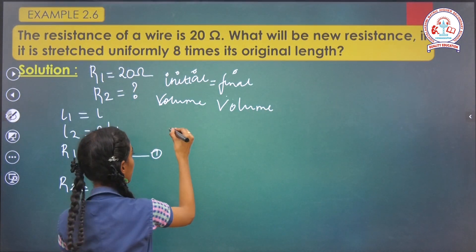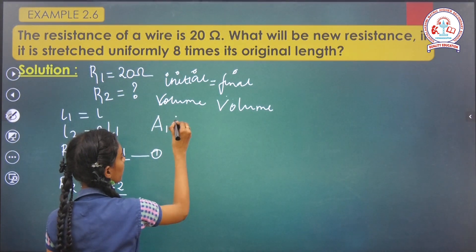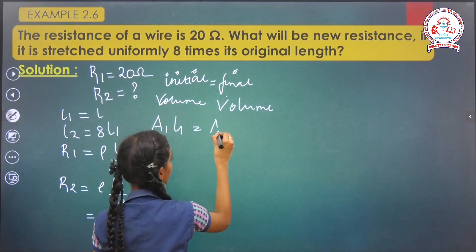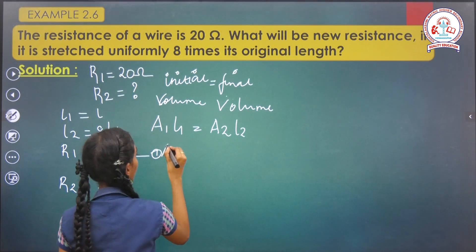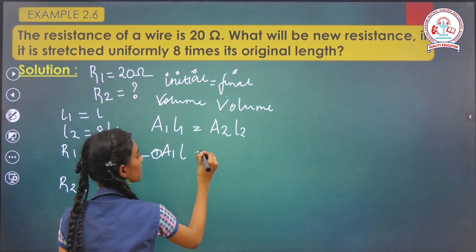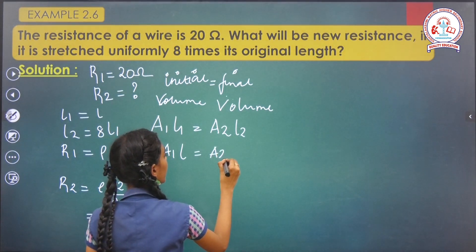Initial volume equals A1L1, which equals A2L2. A1·L equals A2 into L2.